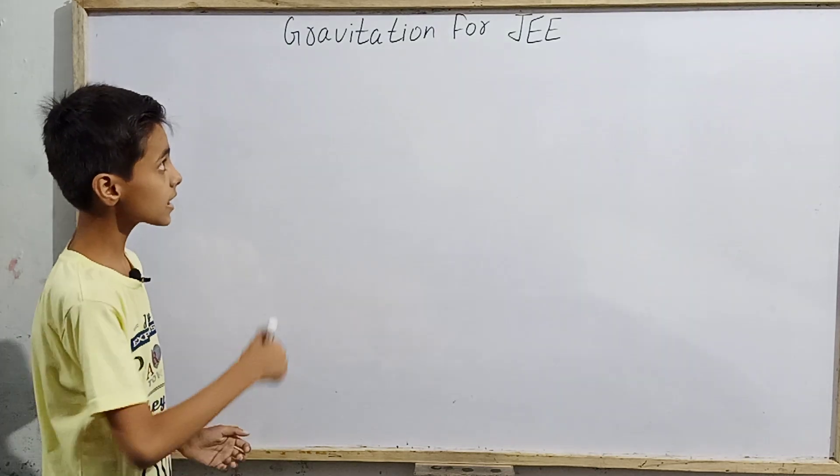The universal law of gravitation is a very important law. While anyone can say that gravitation exists, this law defines the exact magnitude of the gravitational force. So let us now look at what the universal law of gravitation states.